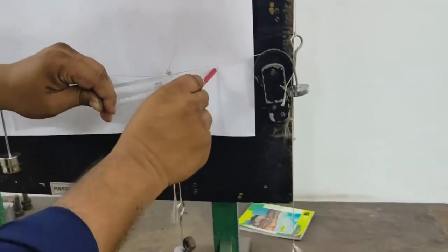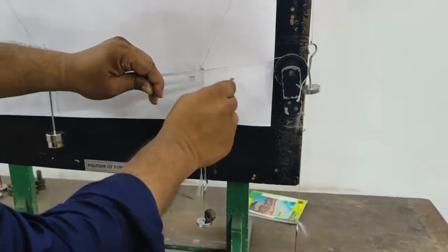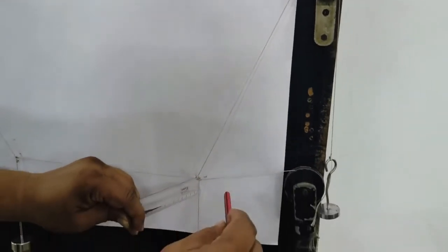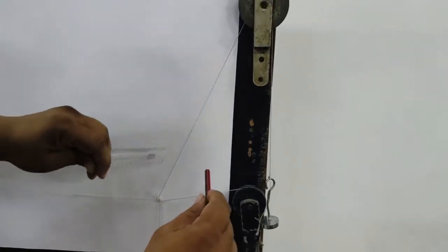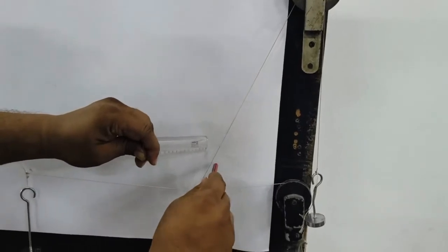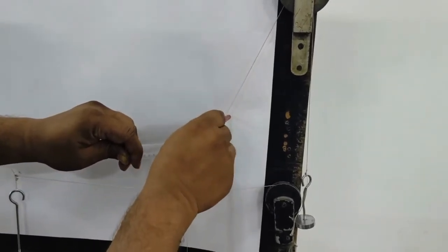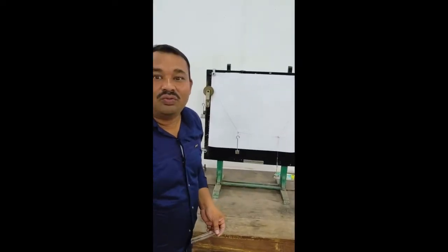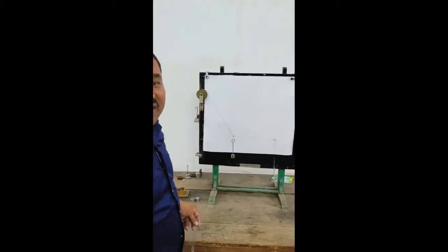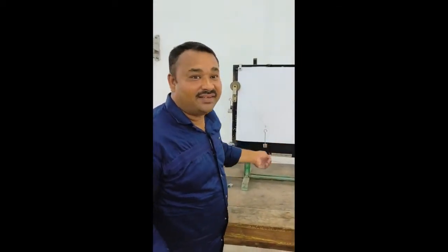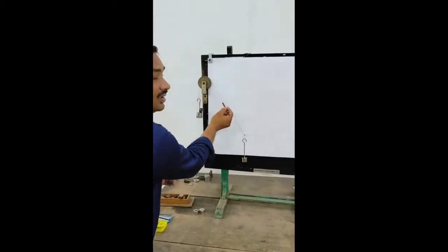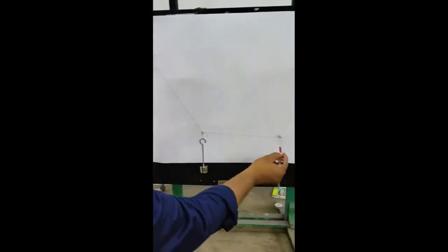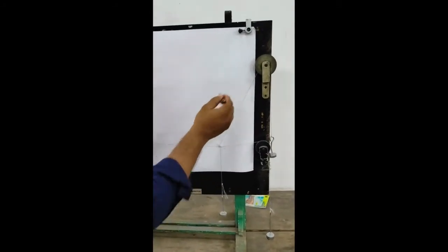To point out these forces, we are taking some points so that we can draw a line. And the last one force. With the help of five forces, the force system creates. Again the five forces: this is F1, F2, F3, F4, F5.